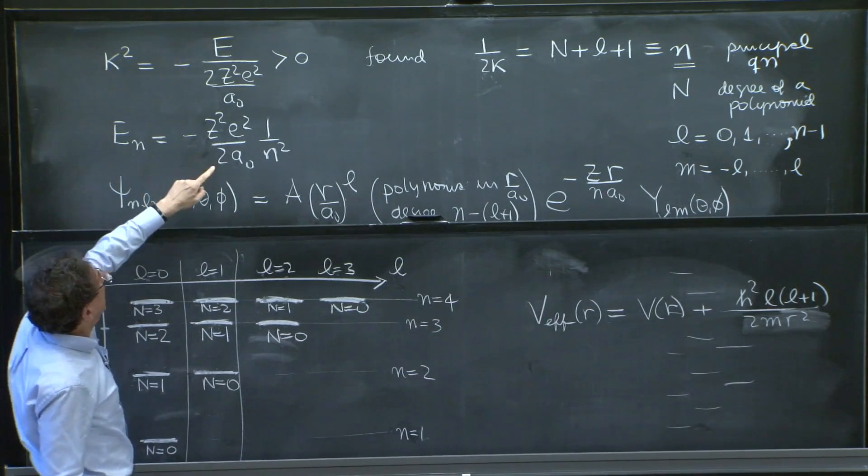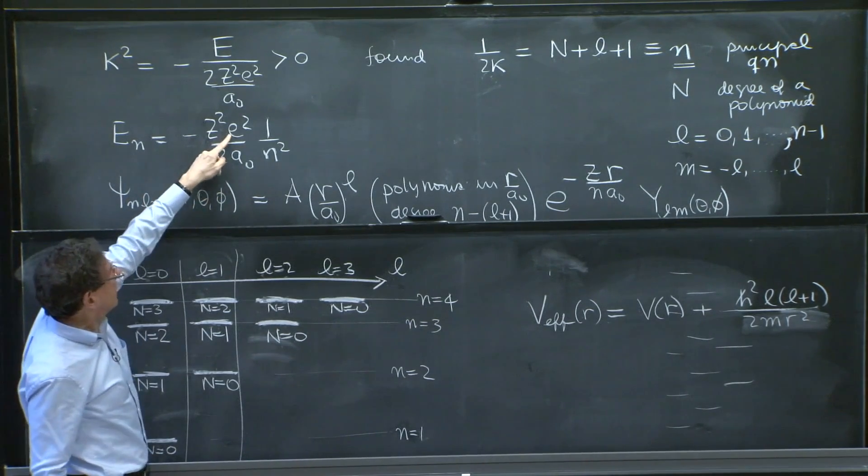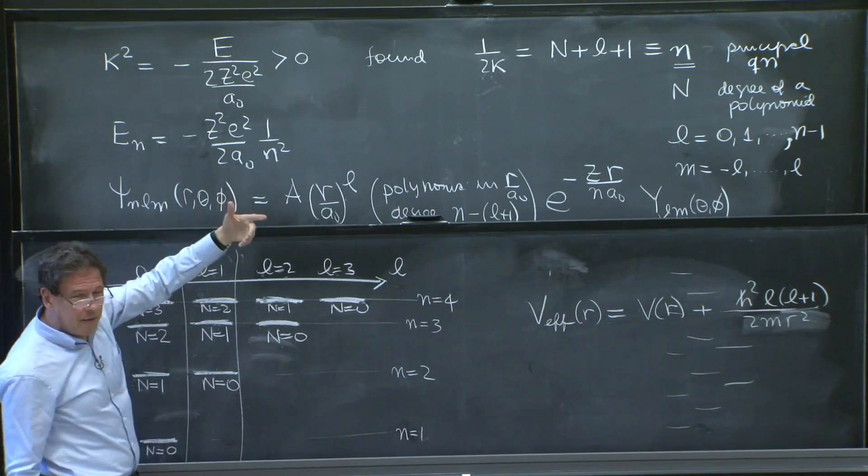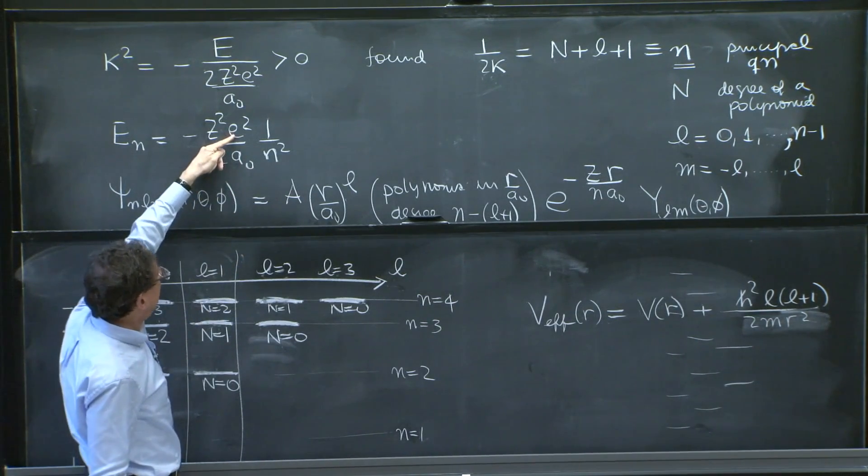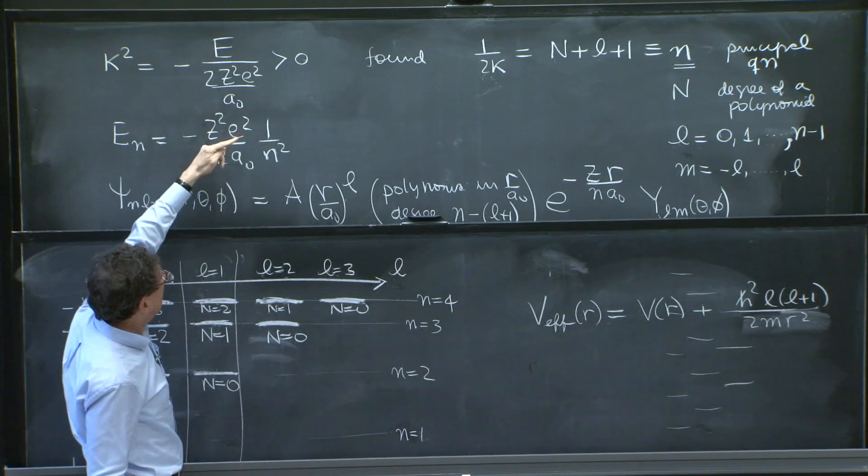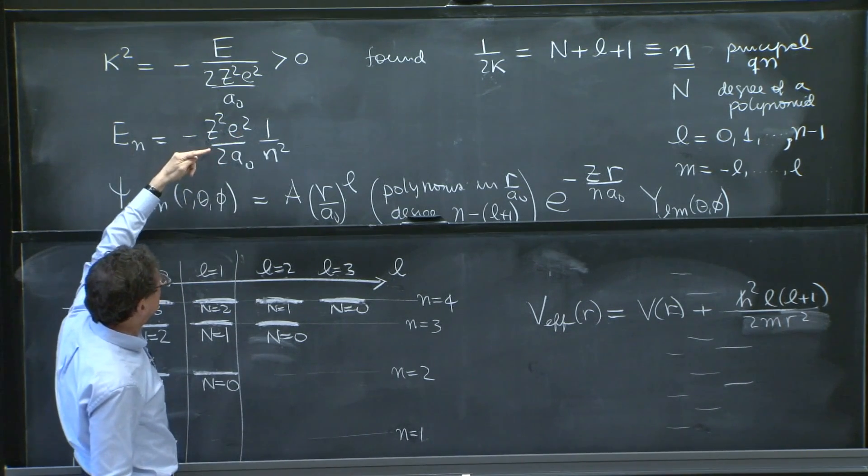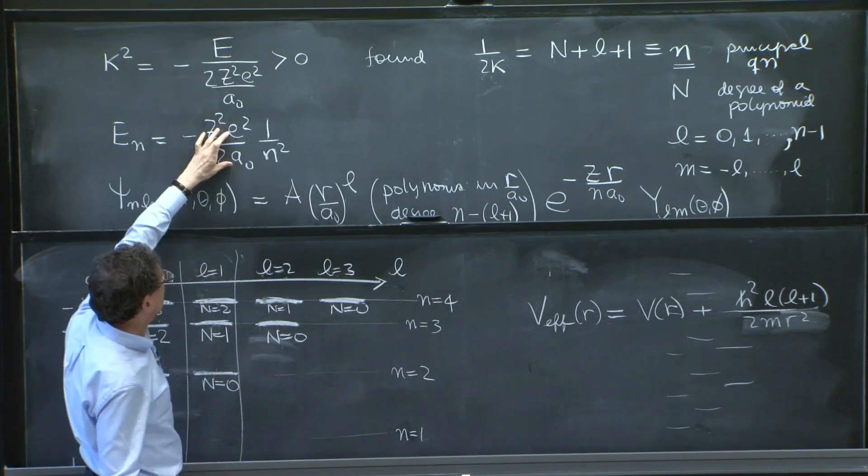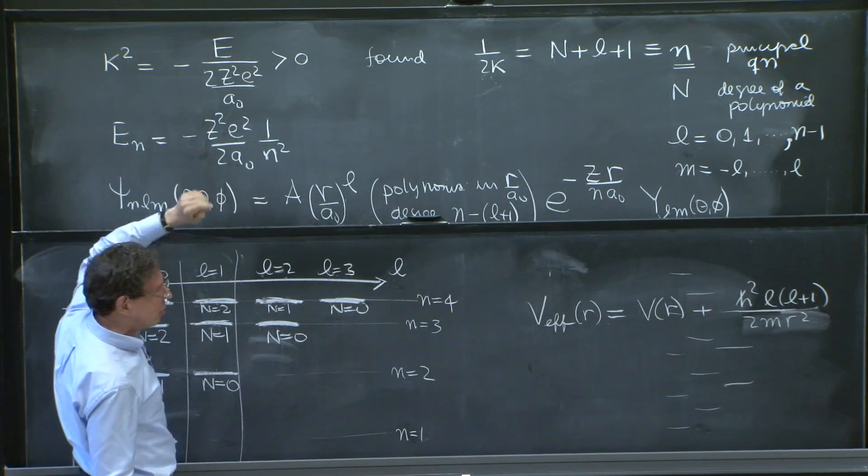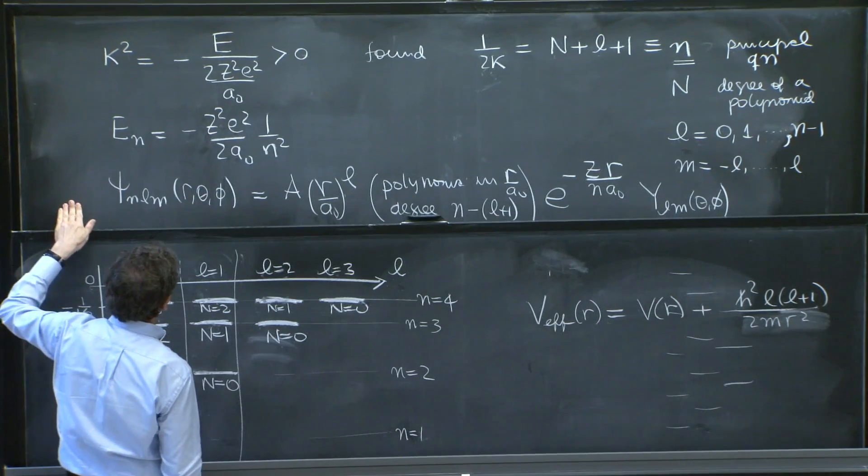Because a naught also has the e squared. So you have to be aware that we write these things. And this is intuitively a very nice way to write the energy, because it has the right units. Electron charge squared divided by distance. But you could have written everything with h bars and things like that, in which case the z squared might have been less surprising.